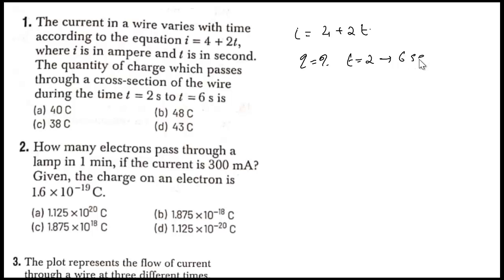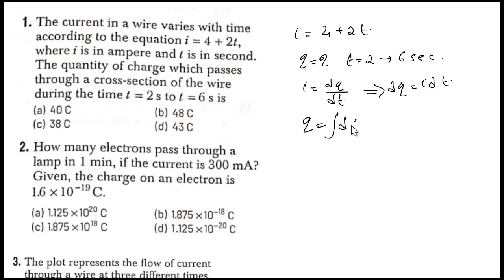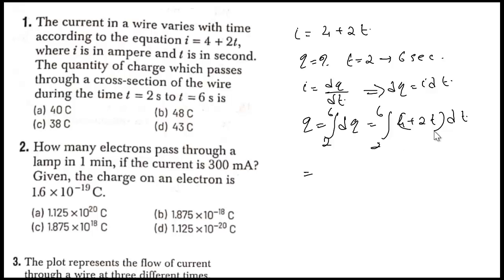If current is given, how can we find the charge? The relation between current and charge is i = dq/dt, therefore dq = i·dt. To find the total charge we need to integrate dq from 2 to 6. Substituting i, we get the integral of (4 + 2t) dt.